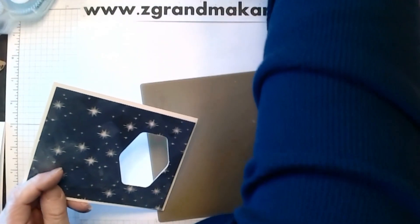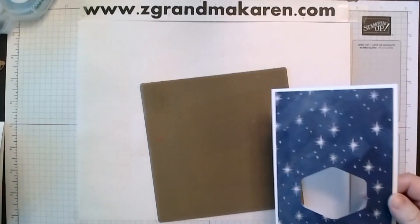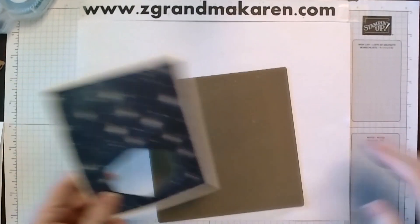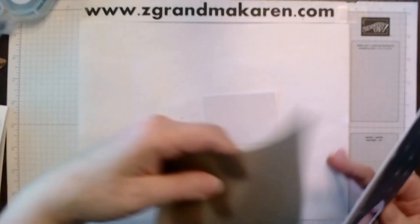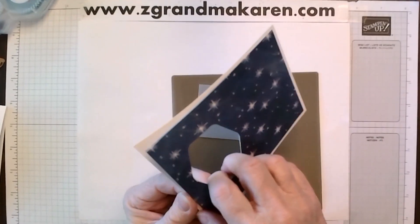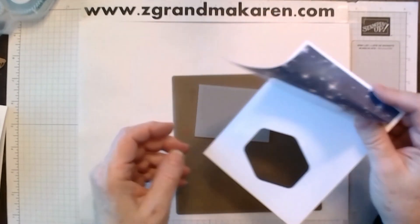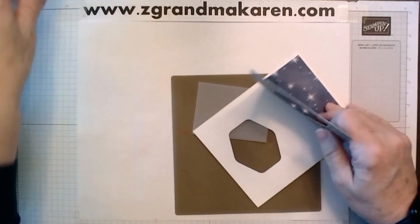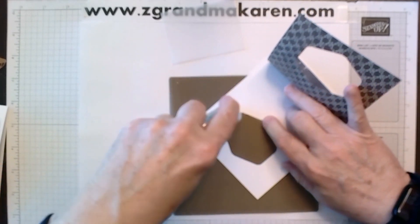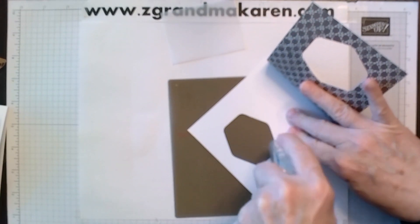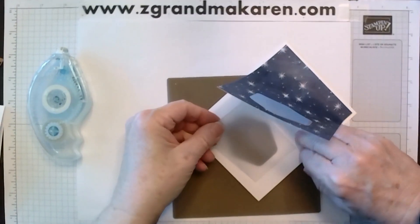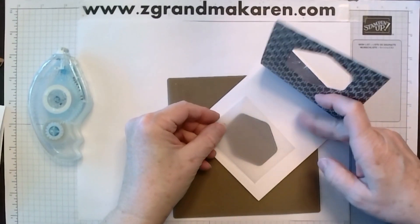Next step is taking our vellum piece. Okay, so I'm taking my vellum piece and I'm opening this up. And this is why we only glued down the first part. And I'm putting adhesive around the inside of the hexagon. Doesn't have to be straight. And then just laying this over the top. Like so. Pushing it down.